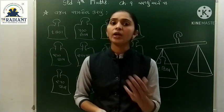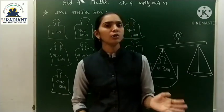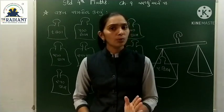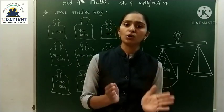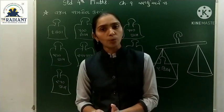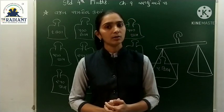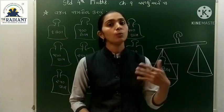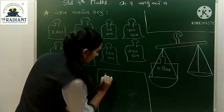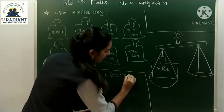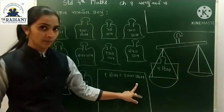આજે આપણે જોઈશું કે 250 ગ્રામ જોઈએ ત્યારે શું કરવું. આજે આપણે જોઈશું — કિલોગ્રામ નો અર્ધો ભાગ, પા ભાગ, અને પોણો ભાગ — એ કેટ્લો થાય છે. એની ગણત્રી કરવાનો આપણે શરૂ કરીશું. અને આ કઈ રીતે કરવાનો છે તે જોઈએ. પહેલાં ખ્યાલ રાખો — 1 હજાર ગ્રામ = 1 કિલોગ્રામ.